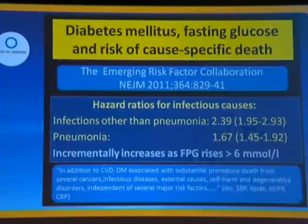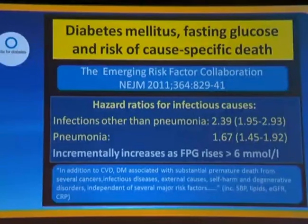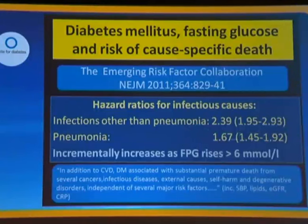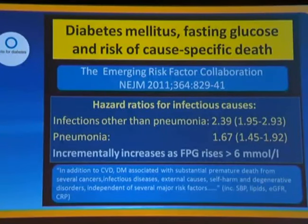the relationship between fasting glucose and risk of cause-specific death covered all causes of death, but in the context of infections, it indicated that there was a greater than two-fold relative risk of death from infections other than pneumonia, and slightly less than two for pneumonias. It was also noted that this risk increases incrementally as the blood glucose rises above six millimoles per liter.